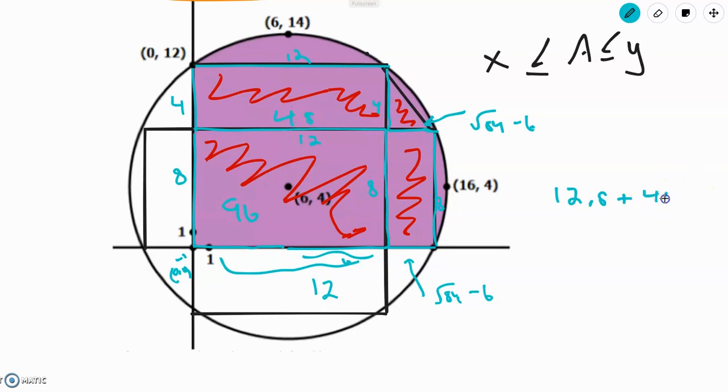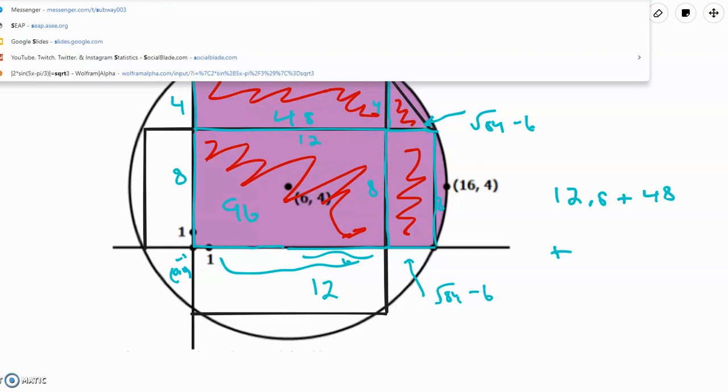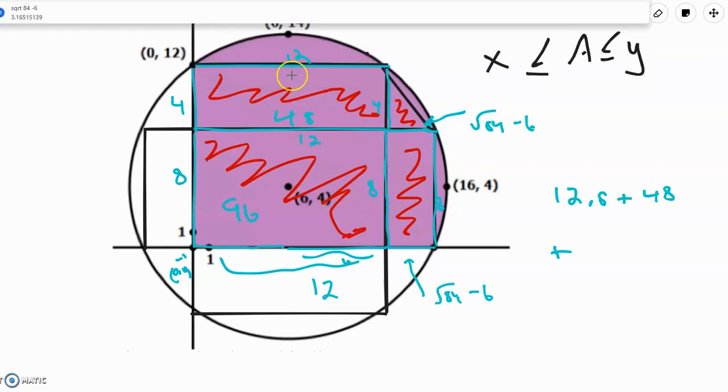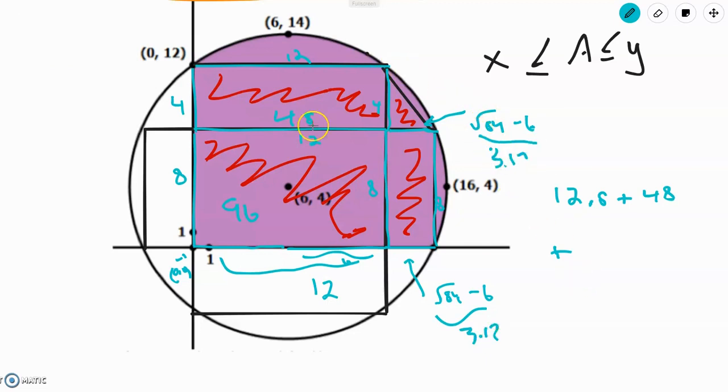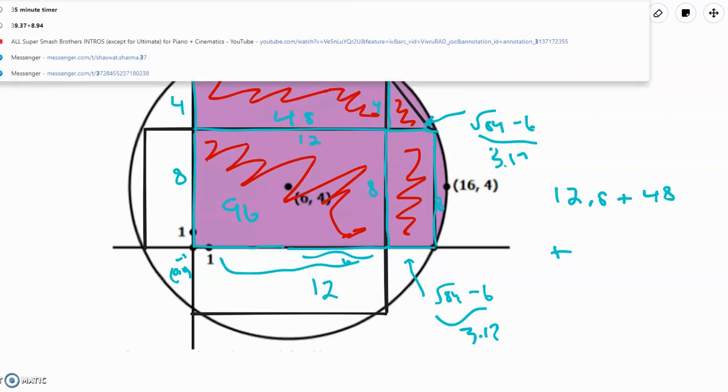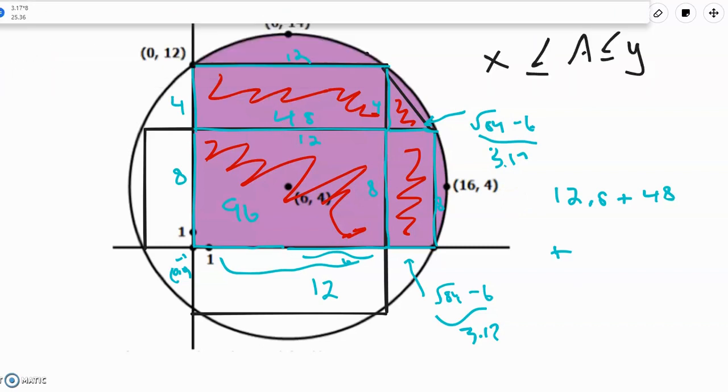So plus square root of 84 minus 6 times 8. And we can put that in your calculator to get the square root of 84 minus 6 is about 3.17. So we can just substitute this over here. And so, plus 3.17 times 8, which by calculator is about 25.36.